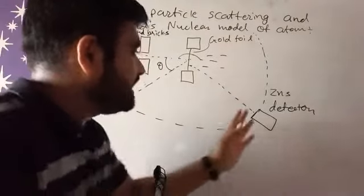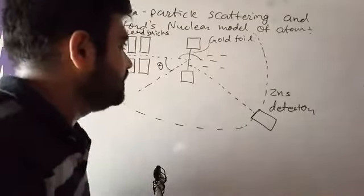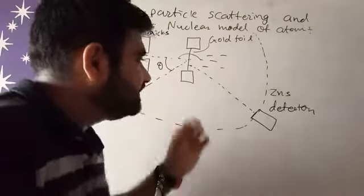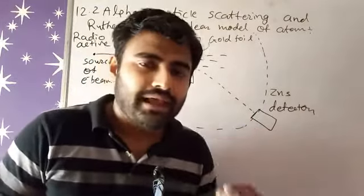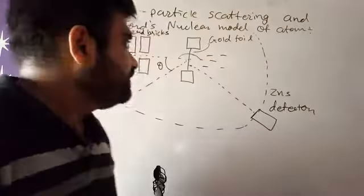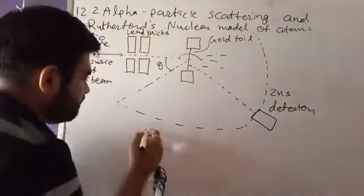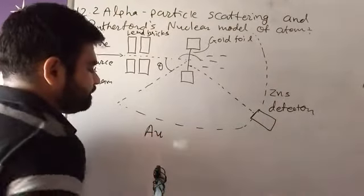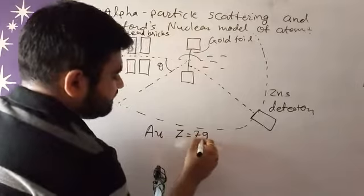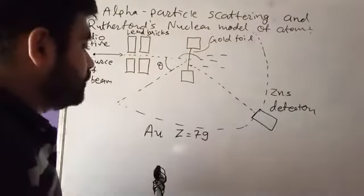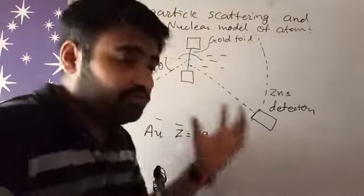So why theta is changing for this scattered electron? Because gold foil is made up of Au, and its atomic number is 79, which is very big. So its nucleus is also bigger.